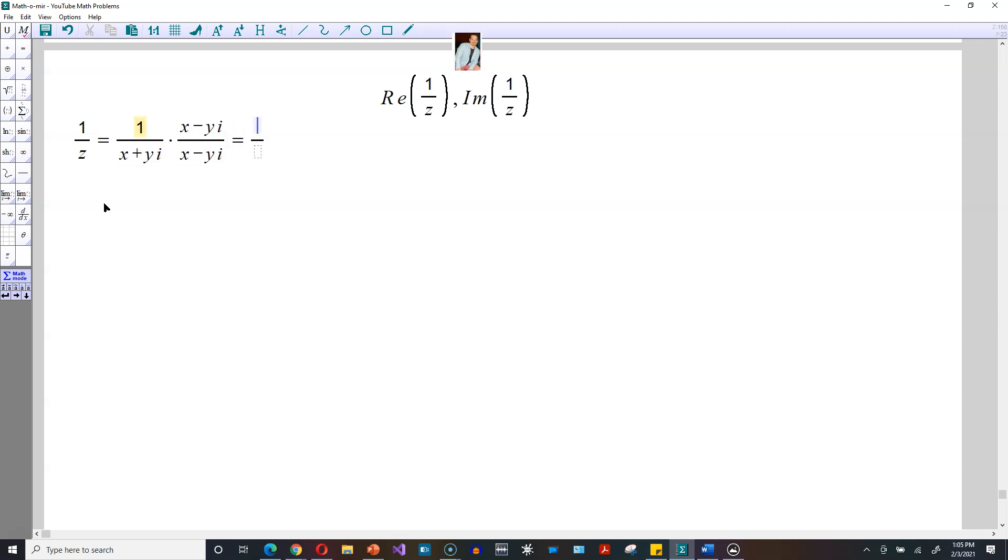Then you carry this out, so it's going to be the following. At the top, it's just going to be x minus yi. But at the bottom, it's a difference of squares, really. So it's going to be x squared minus, and then it's going to be yi quantity squared.